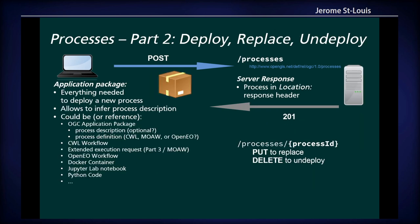With Processes Part 2, you have an application package that contains everything the server needs to create the process. There are various ways to do this — it could be a JupyterLab notebook, a Docker container, a CWL workflow, or an execution request to define your workflow as in Part 3. After that, your process is available and you can execute it with Part 1. There's a way to update it with a PUT and delete it with a DELETE operation. That's still a draft specification.